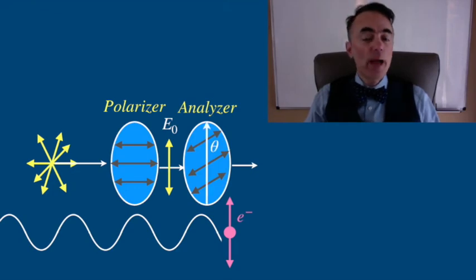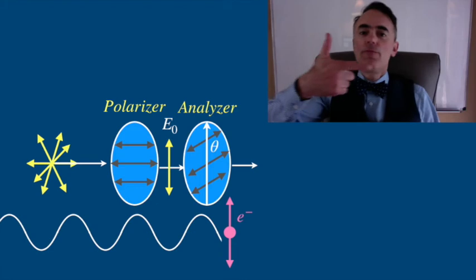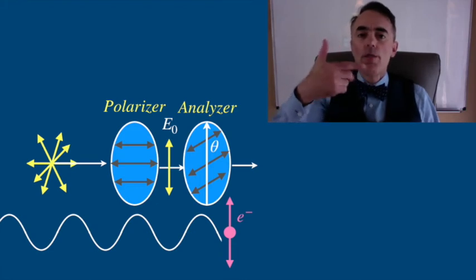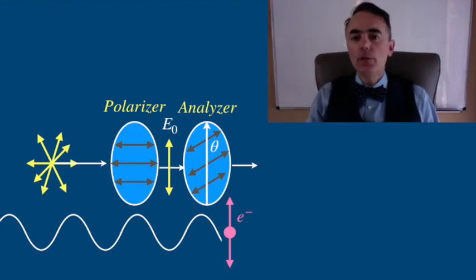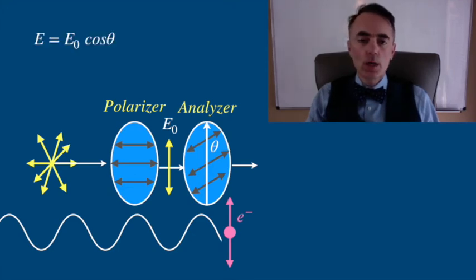Some light will pass through both of them because you can write the polarization vector with horizontal and vertical components and the amplitude of the E field that will go through the second one will be E0 times the cosine of theta.